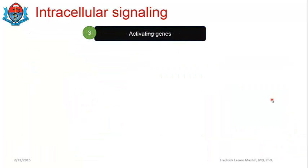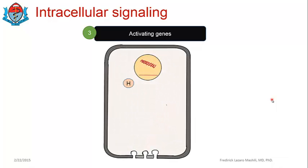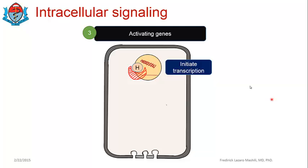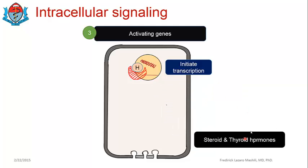The third mechanism is activating genes. The hormone-receptor complex enters the genetic machinery to activate transcription. Changes in transcription lead to changes in proteins, and proteins are the ones that bring about biological responses — so changes in protein expression result in changes in biological responses due to that particular hormone. Good examples here are steroids and thyroid hormones, which we will cover in detail later.